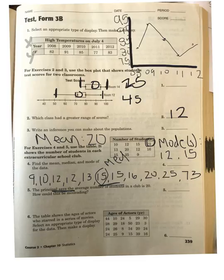For number 6, the table shows the ages of actors who starred in a series of movies. Select an appropriate type of display for the data, then make a display. As you can see, we have quite a few data points. When thinking about this, since we have so many, the best bet is probably to use a stem and leaf plot.